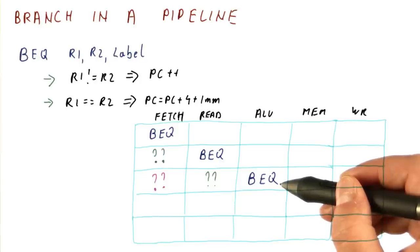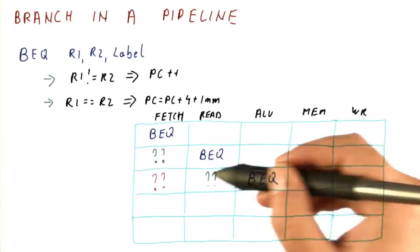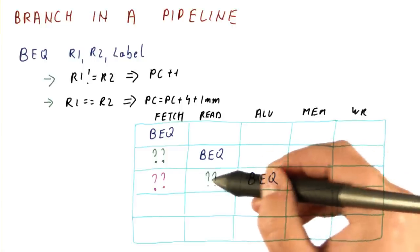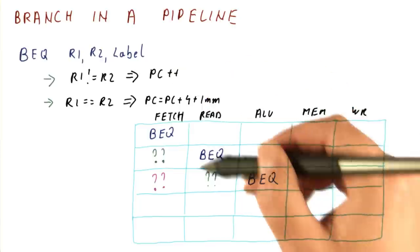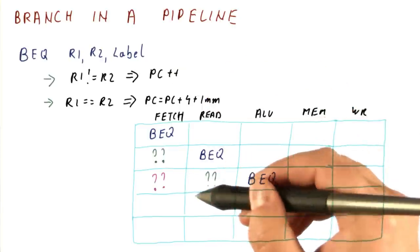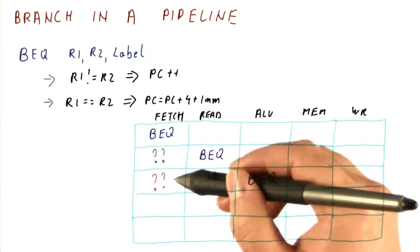Now there are two possibilities. Either we have fetched the correct instructions. For example, the branch is not taken, and we have taken the instructions that follow the branch. The branch is not taken, that means the PC just gets incremented, and we fetch the right instructions. In which case, we have no bubble in our pipeline. We can just proceed. We fetch the right instructions.